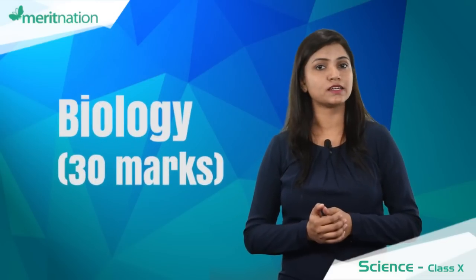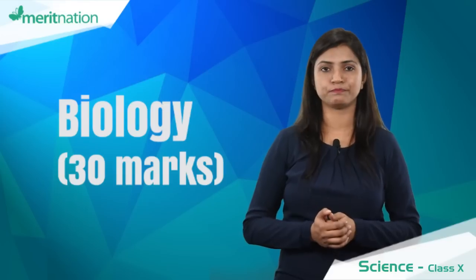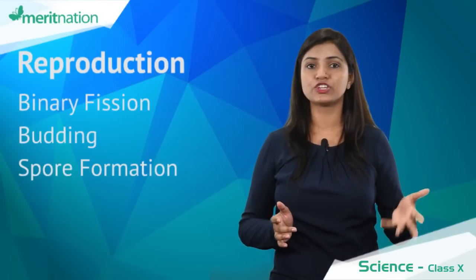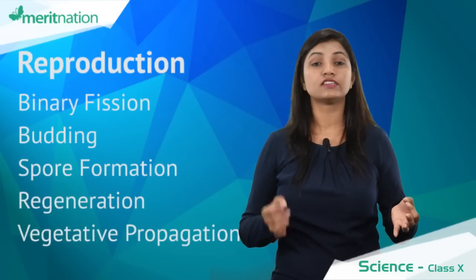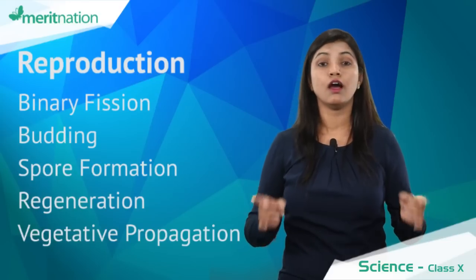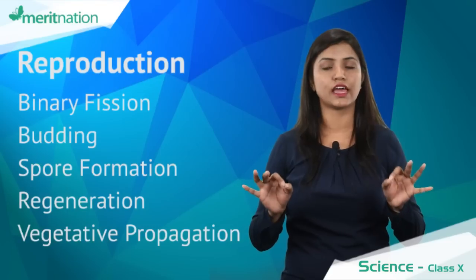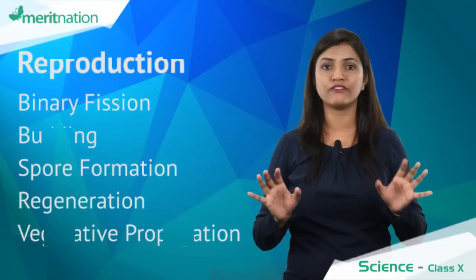Now moving on to the biology portion, we have got two chapters again, 30 marks. From the chapter reproduction, we have got five modes of asexual reproduction: binary fission, budding, spore formation, regeneration, and vegetative propagation. One question will surely be there out of these five modes of asexual reproduction, so prepare very well. Now this chapter is very important as far as the diagrams are concerned, so you need to draw well-labeled diagrams.